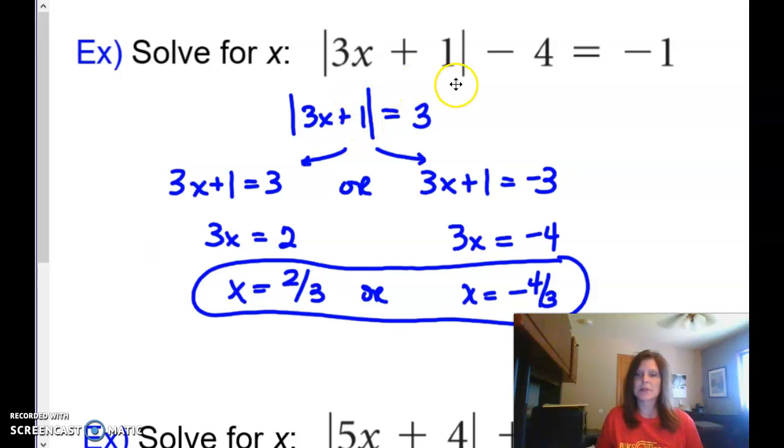So the absolute value of 3x plus 1, and then a minus 4 is equal to negative 1. Well, the absolute value isn't isolated. There's stuff on the same side with it. So we need to get rid of this minus 4, and we'll do that by adding 4 to both sides. So now I have a simple absolute value of 3x plus 1 is equal to just a number 3. Now I can move in, drop those absolute values, and get my two separate equations.